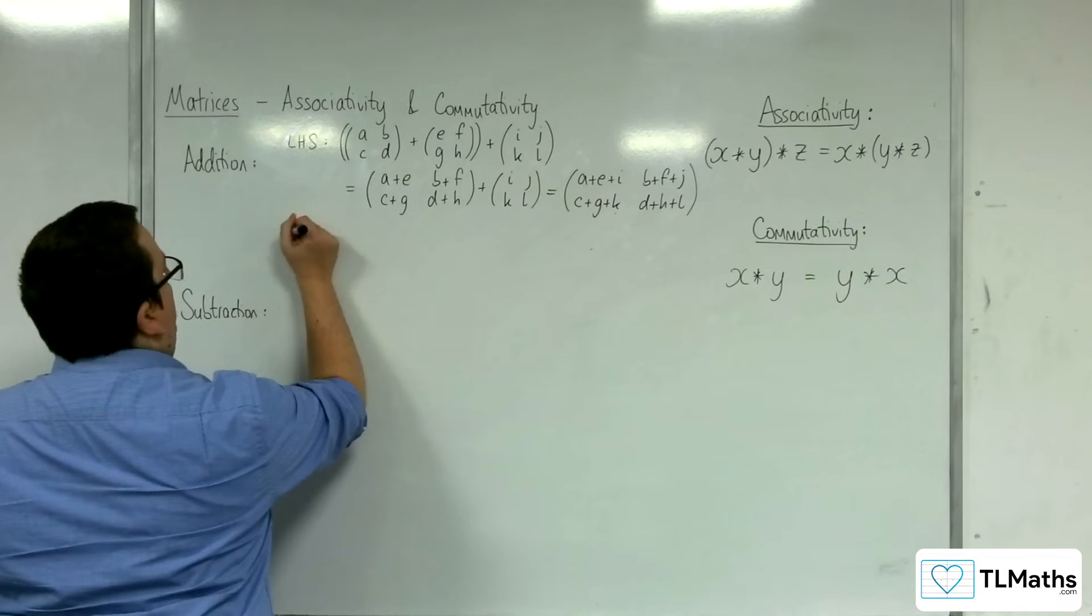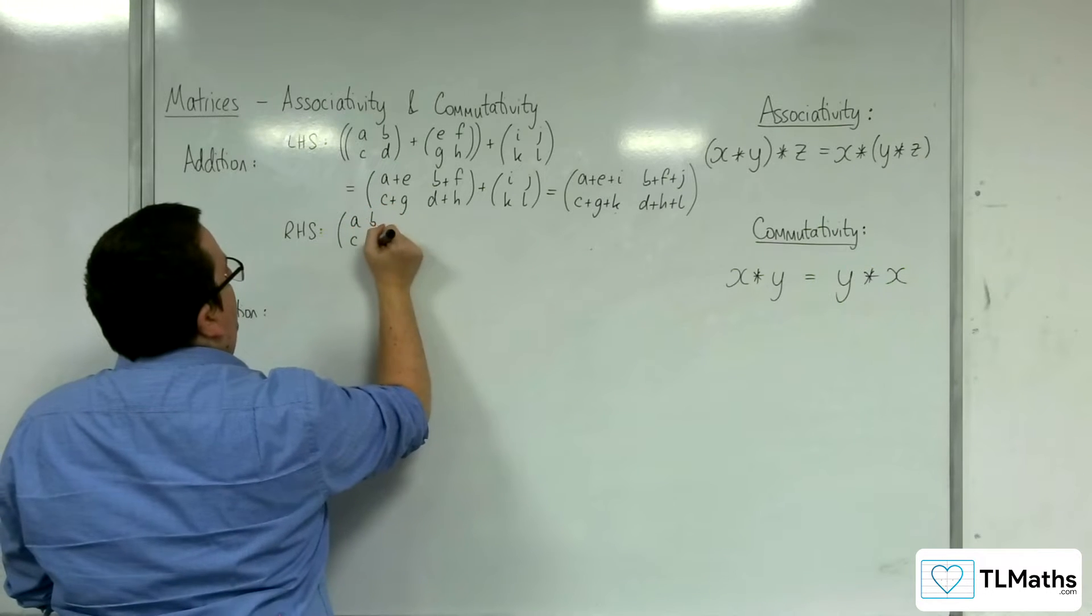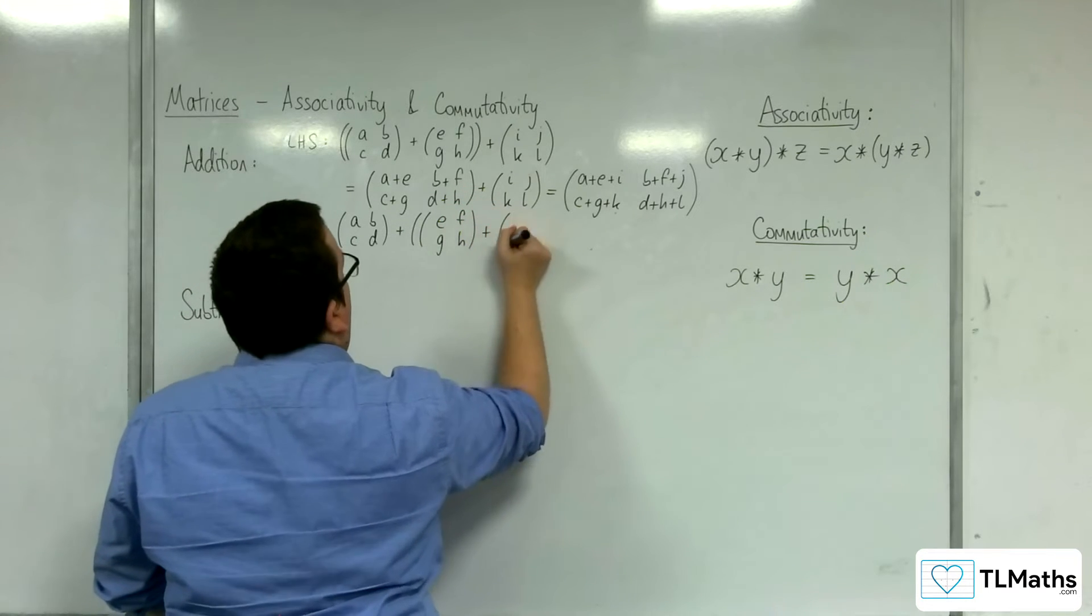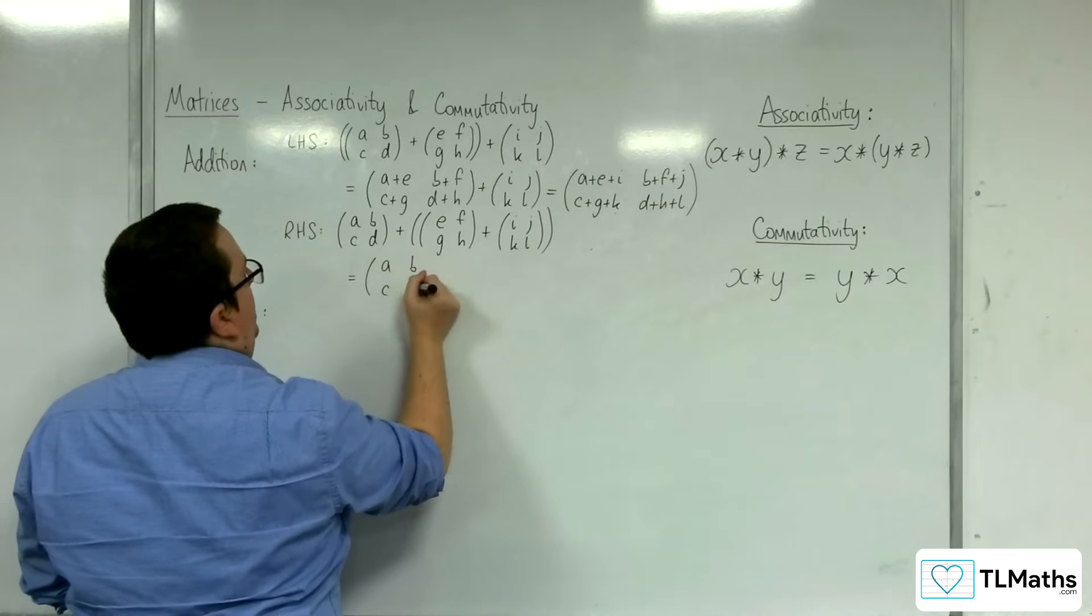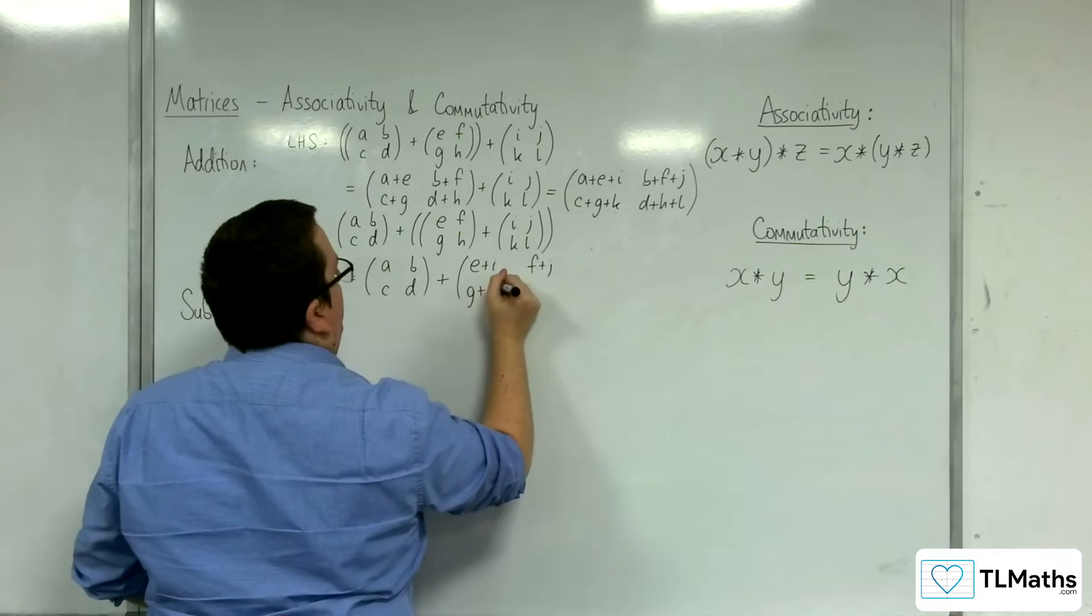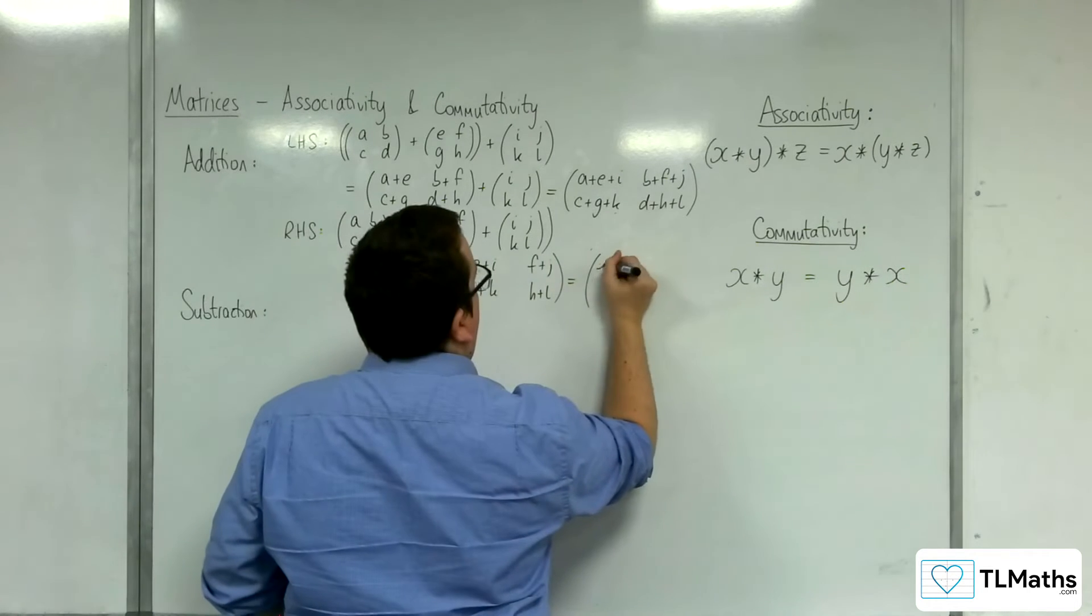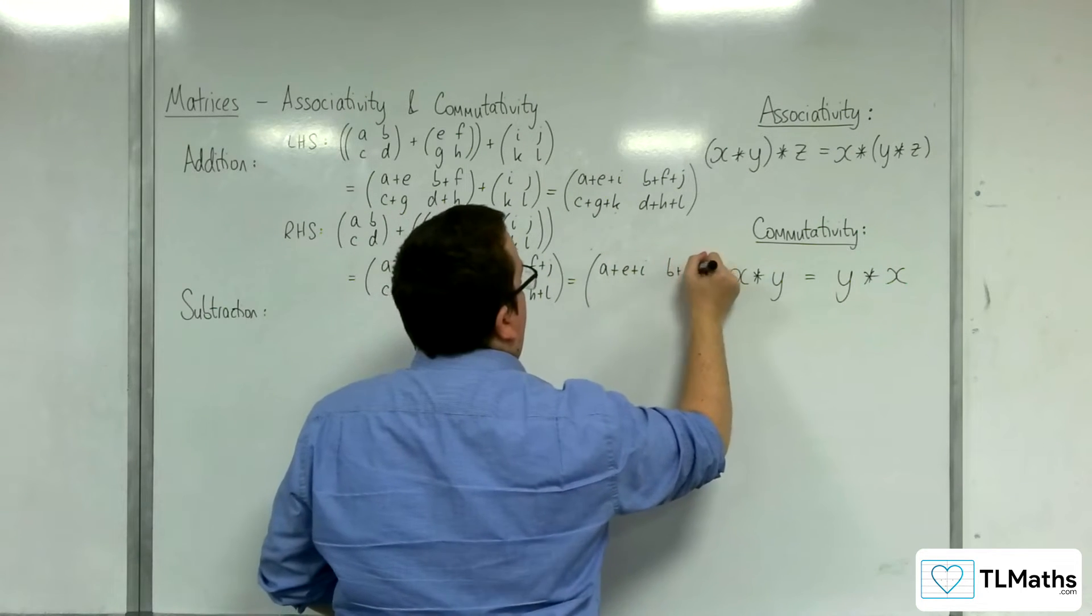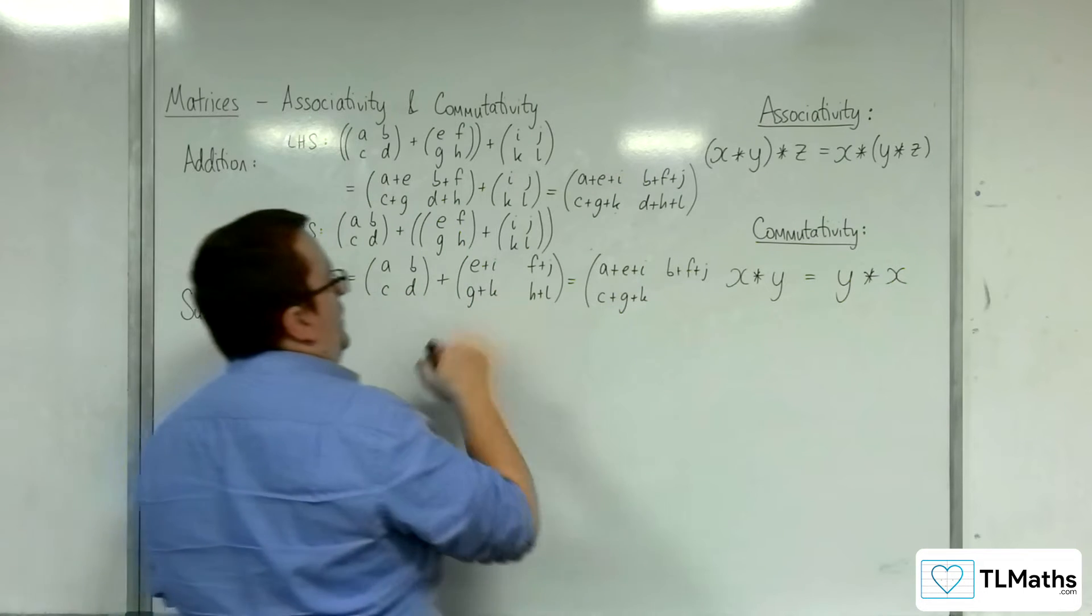Now if I check the right-hand side, then what I need is a, b, c, d to be left alone for the moment. And I'm going to add together e, f, g, h and i, j, k, l. So we've got a, b, c, d, plus e+i, f+j, g+k, h+l. So we get a+e+i, b+f+j, c+g+k, and d+h+l.